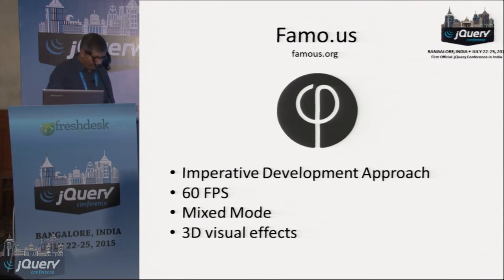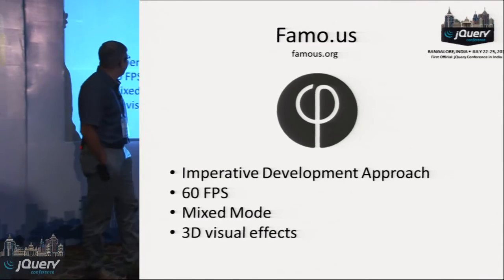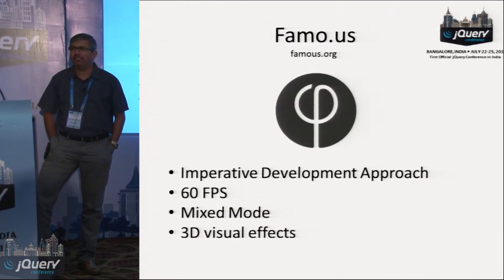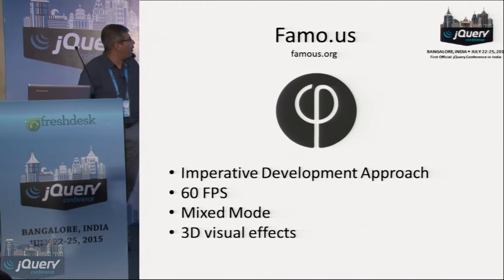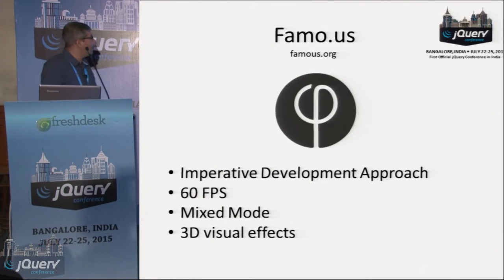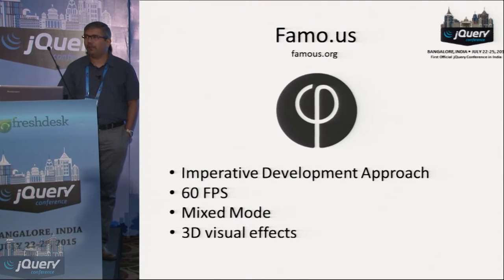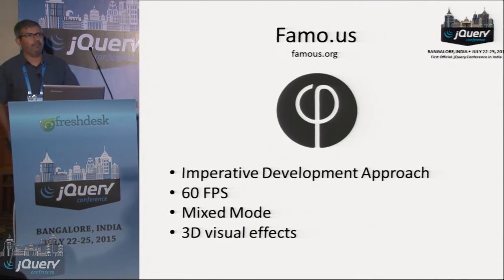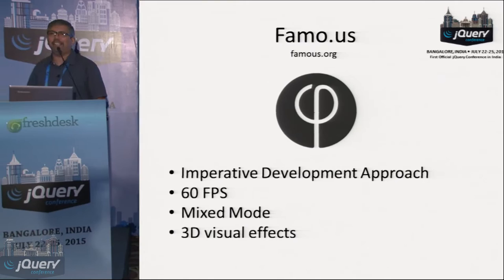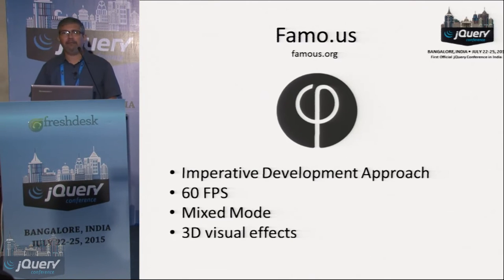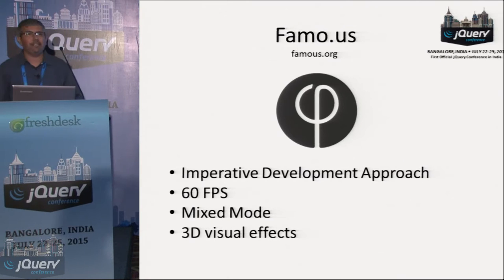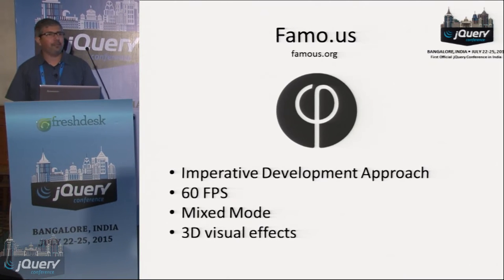When it comes to user interfaces, Famous has something called an imperative development approach, which is completely different from the declarative syntax of HTML and CSS. All the coding, all the widgets, the panels, whatever you build as part of your UI applications will be directly built using JavaScript using the API which Famous provides. You typically do not write any HTML code. Famous supports animations and Famous claims - they vigorously claim - that they can do 60 frames per second, which nobody else can do. They have done some benchmarking and got some pretty good claims about this.